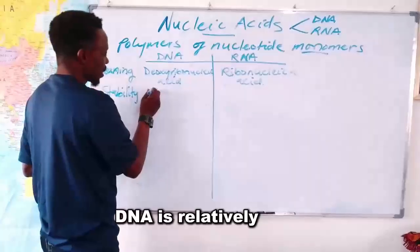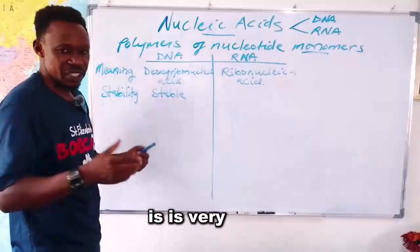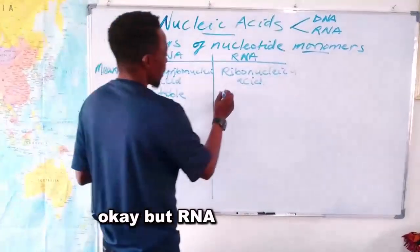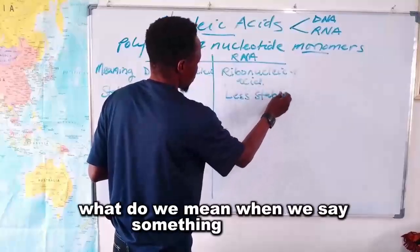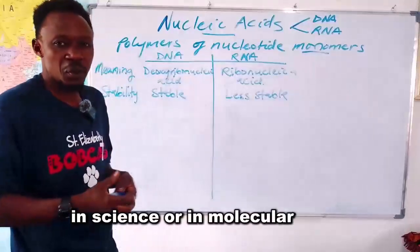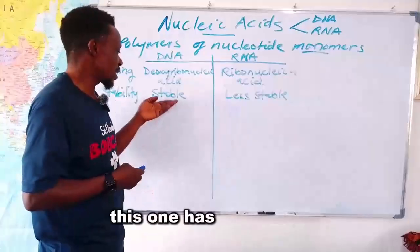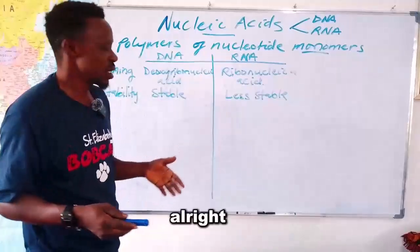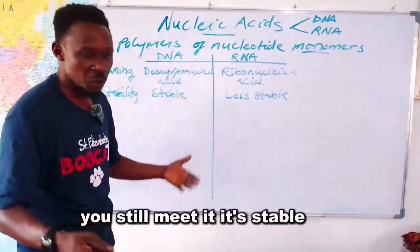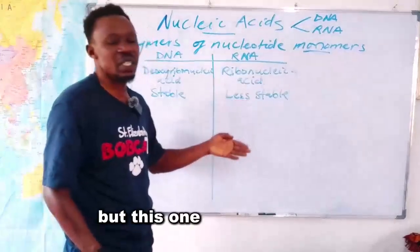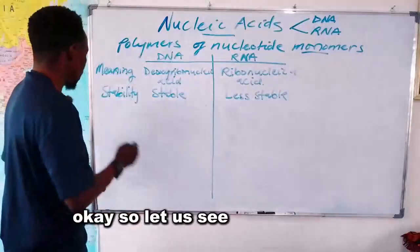In terms of stability, DNA is relatively very stable, while RNA is less stable. When we say something is stable in molecular biology, we mean it has a longer lifespan — you can set the molecule aside and return to find it still intact. RNA, by contrast, has a short lifespan.